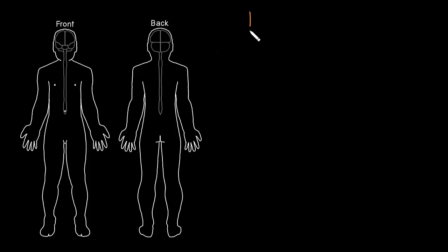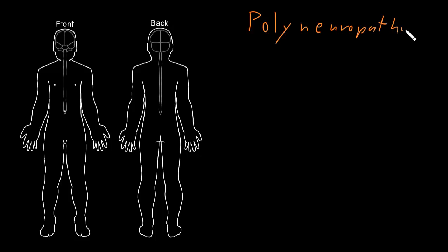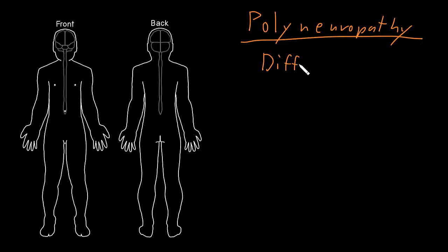In this video, I'm going to talk about polyneuropathy. Polyneuropathy means diffuse dysfunction of the nerves of the peripheral nervous system.